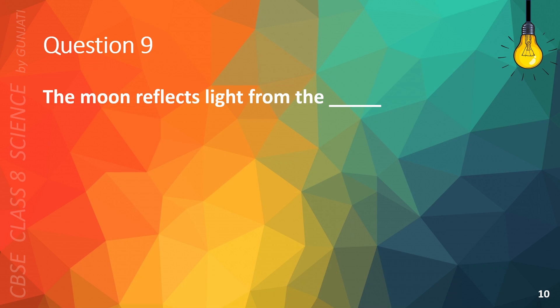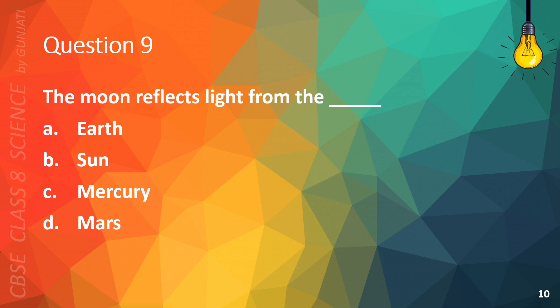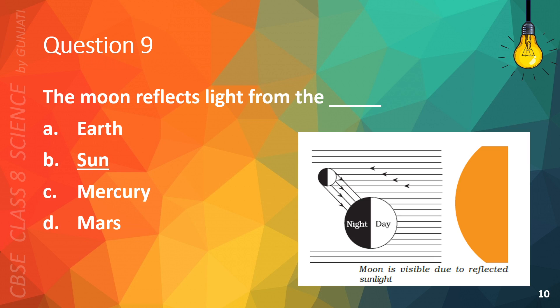Question 9. The Moon reflects light from the A. Earth, B. Sun, C. Mercury, or D. Mars. The correct answer is B. Sun. This is a picture of the Moon being visible due to reflected sunlight.